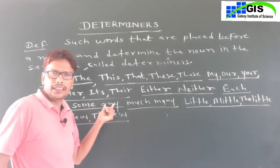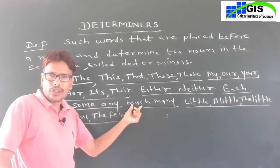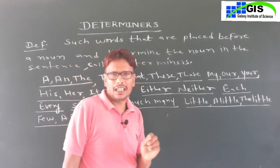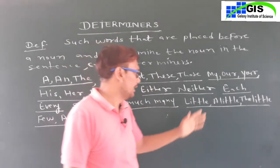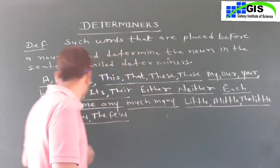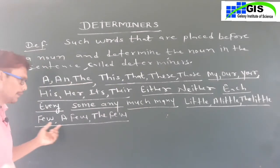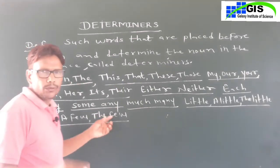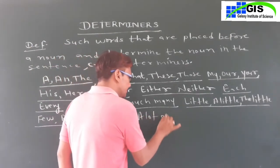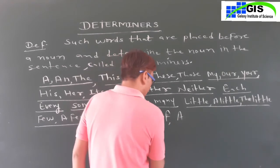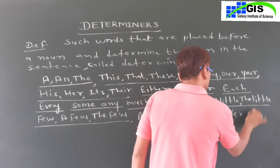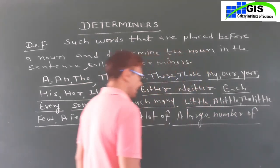Some — kuch; Any — koyi; Much — zyada (jo gin nahin sakte); Many — bahut (jo gin sakte hain); Little — thoda sa, na ke barabar, kisi kaam ka nahin; A Little — thoda sa, kuch kaam ka; The Little — jo kuch thoda sa (specific); Few — kuch, koyi kaam ka nahin; A Few — kuch, kaam ka; The Few — jo kuch (specific). Also: A Lot of, A Large Number of, A Great Number of.